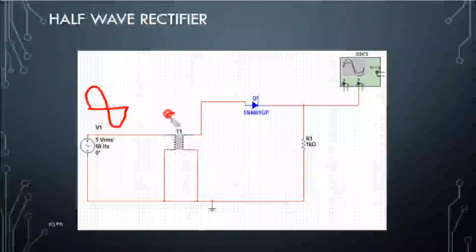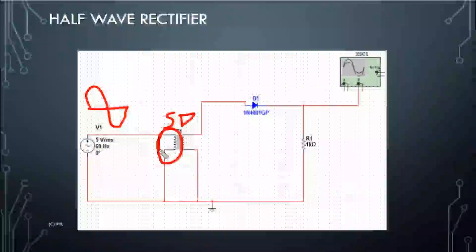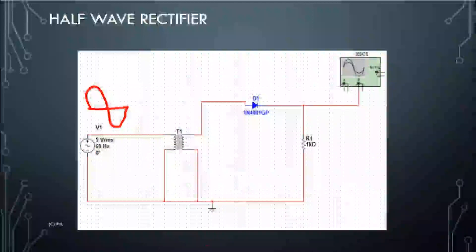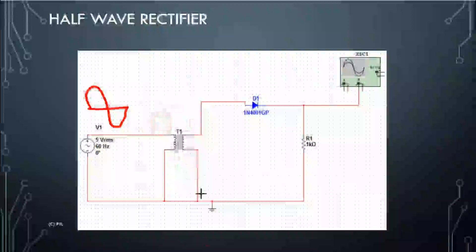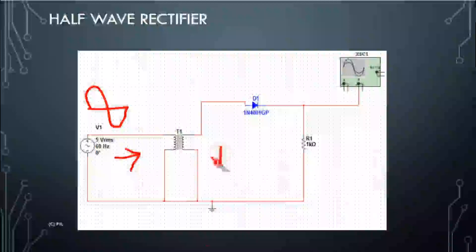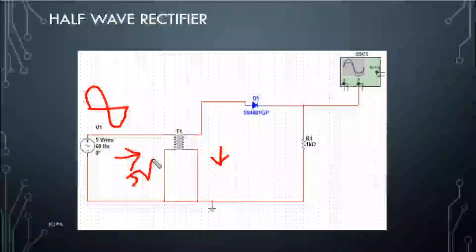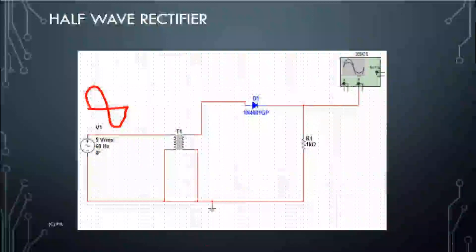This is a step-down transformer with primary and secondary windings — two coils. The input signal goes into the step-down transformer, which reduces the voltage. The output waveform from the transformer is sinusoidal and bidirectional.